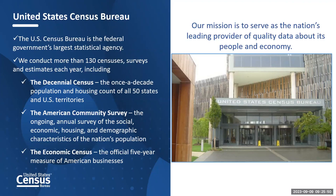There are 13 principal federal statistical agencies identified by the Office of Management and Budget, and the United States Census Bureau is the largest. You may best know us by the decennial census, which happens every 10 years, the last one being held in 2020. But we actually conduct over 130 censuses and surveys each year on social, economic, demographic, and housing data. While most of our surveys are optional, we do have the mandatory constitutional obligation to conduct the decennial census, the American Community Survey, and the economic census. The economic census collects statistics about businesses and takes place every five years, in years ending in two and seven.